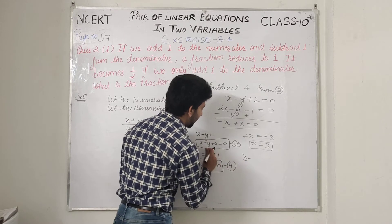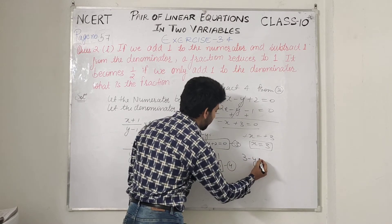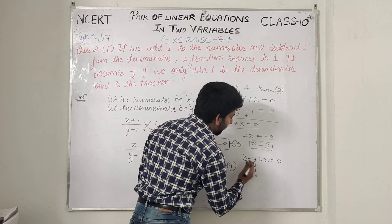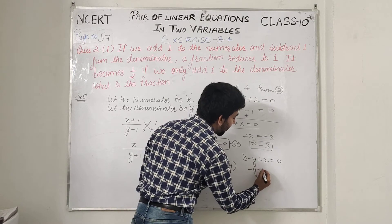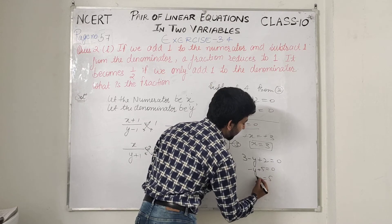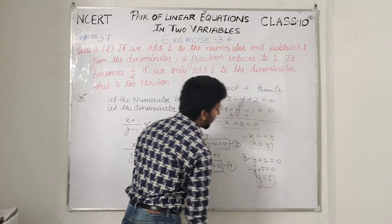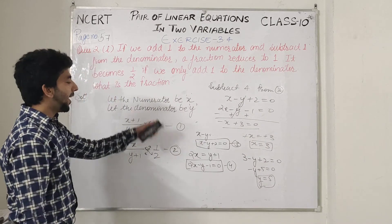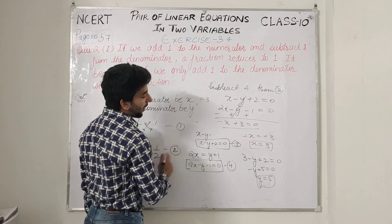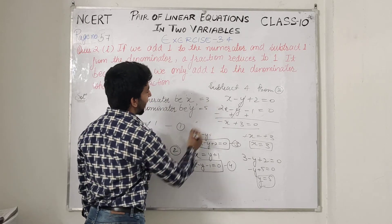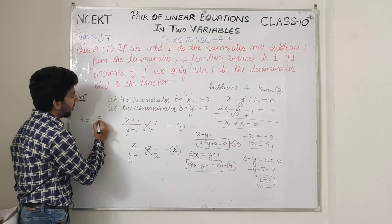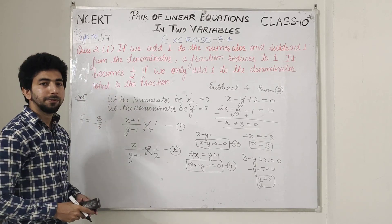Substituting x equals 3: x minus y plus 2 equals 0. 3 minus y plus 2 equals 5. Y equals 5. So numerator is 3 and denominator is 5. The fraction becomes 3 upon 5. Done.